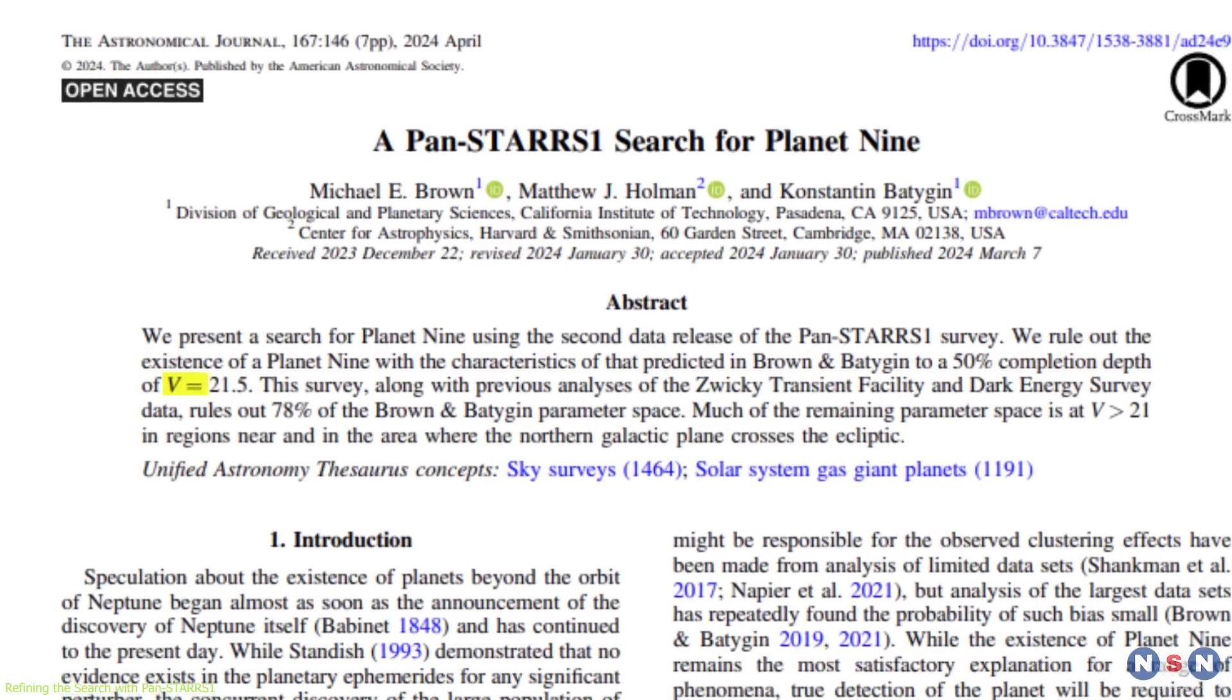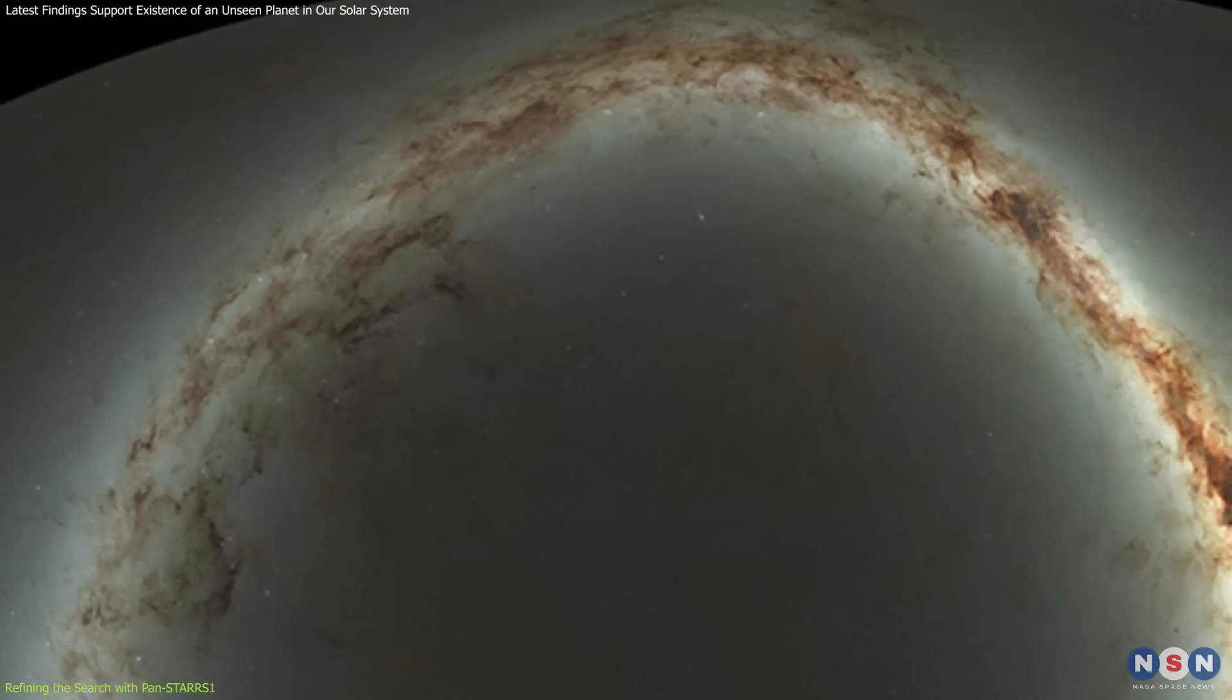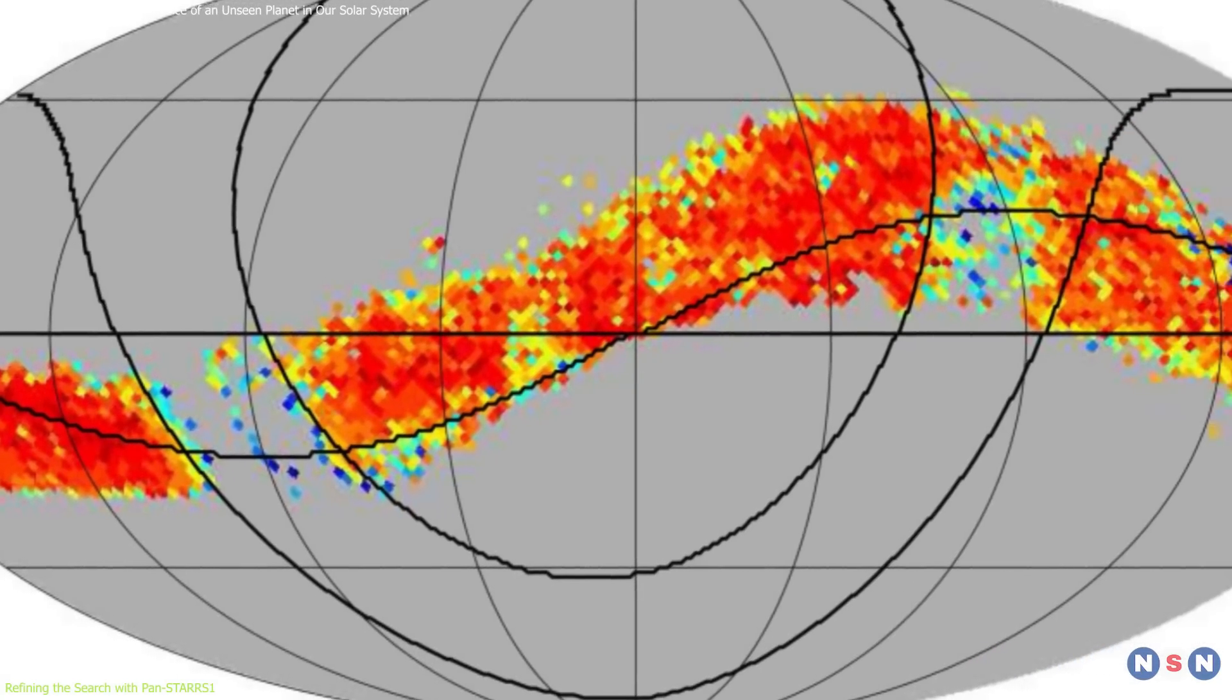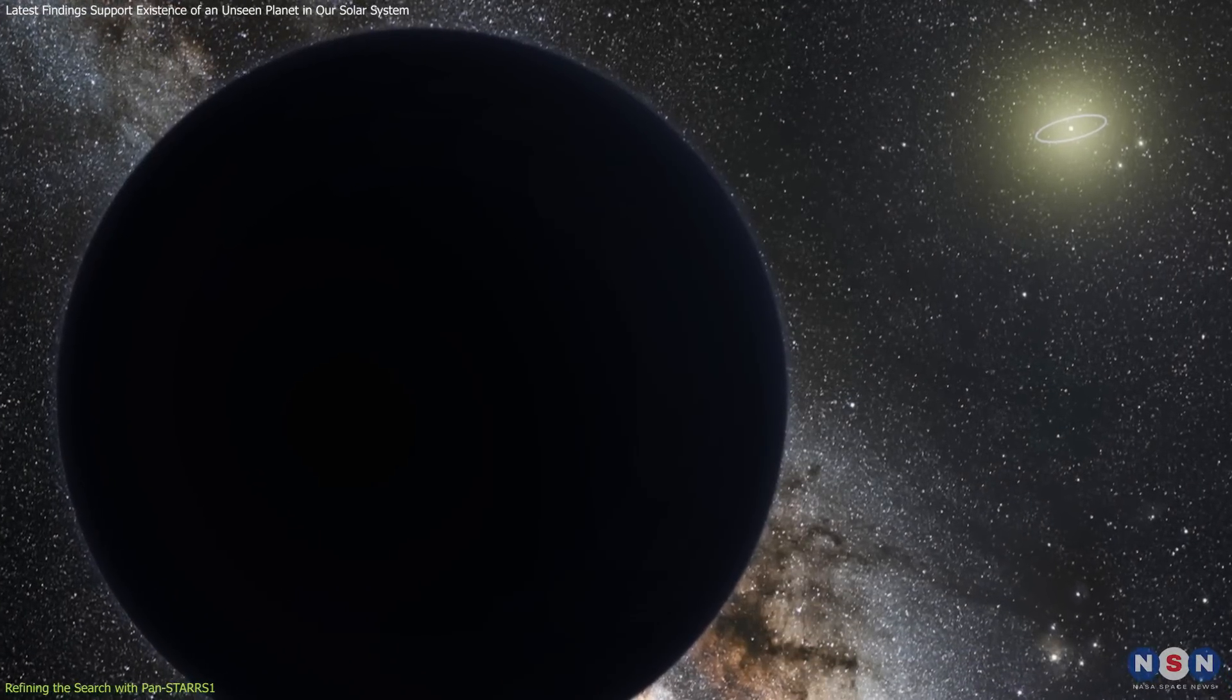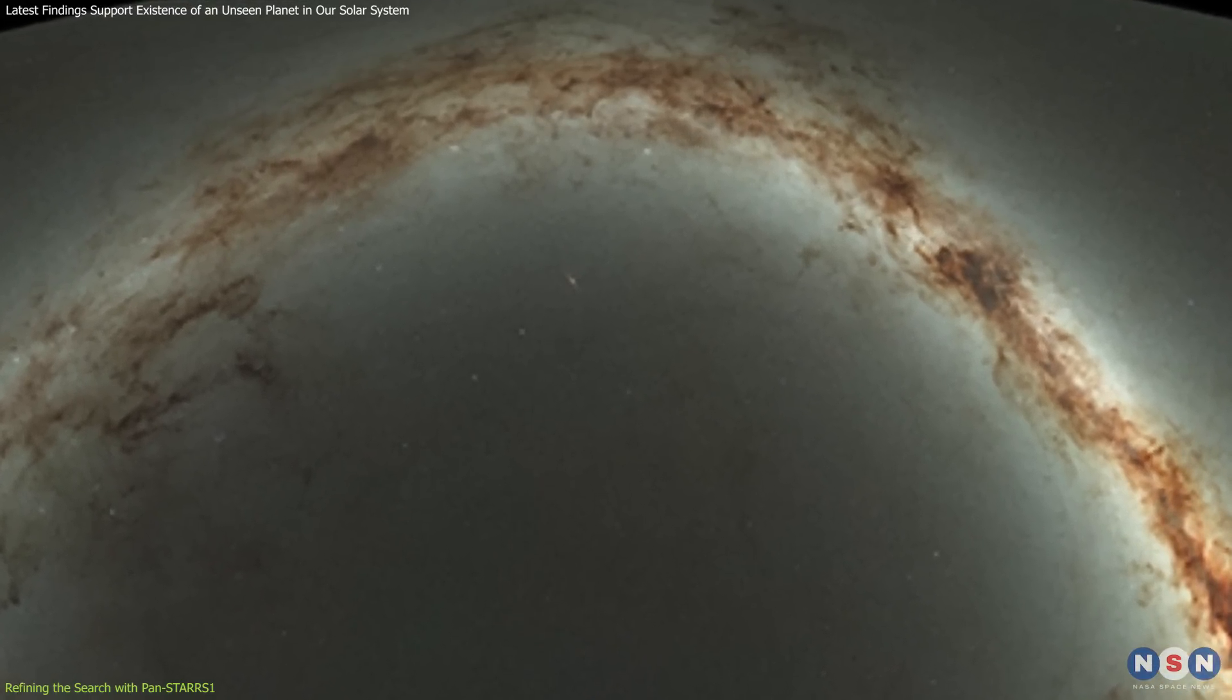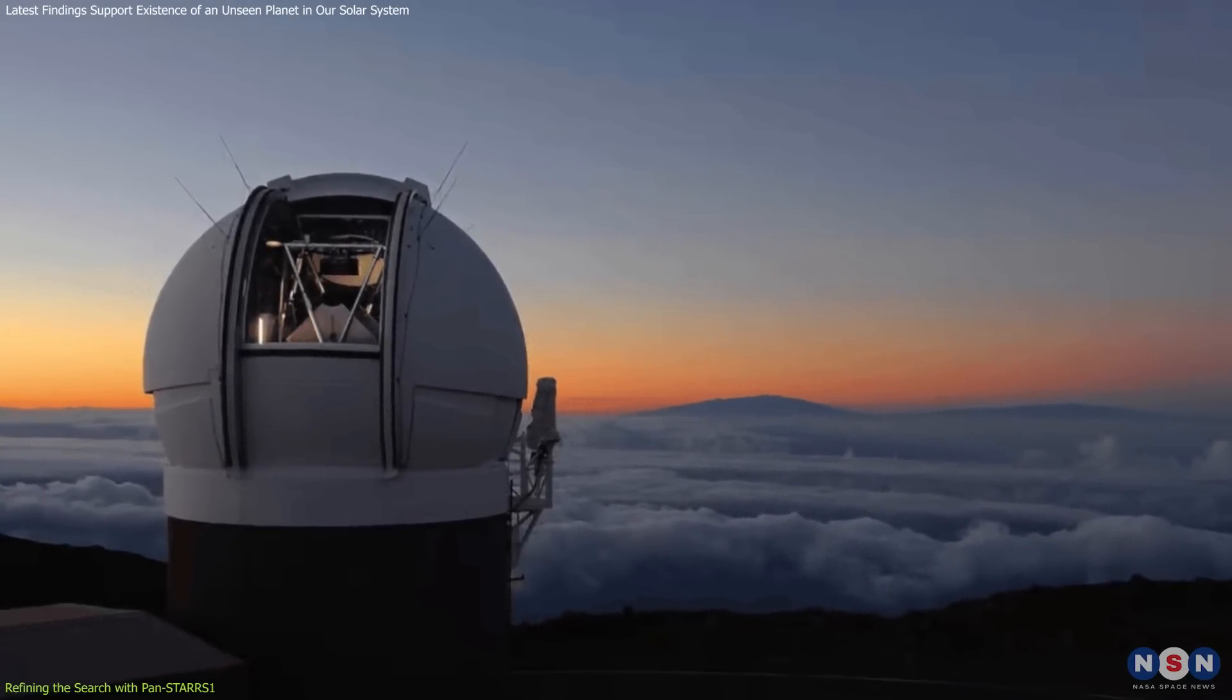The study achieved this by focusing on a completion depth of v21.5, meaning it surveyed the sky to a visual magnitude of 21.5, at which point about half of the sky area could reliably be ruled out for hosting a planet with the predicted characteristics of Planet 9. This depth of survey is critical because it balances the need for comprehensive coverage with the practical limitations of telescope sensitivity and time availability.